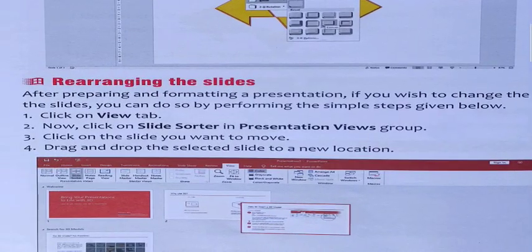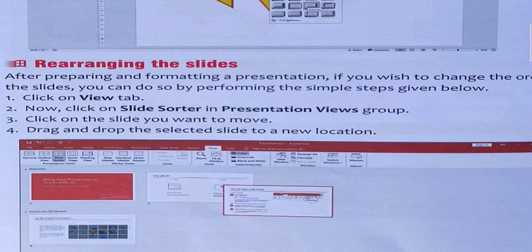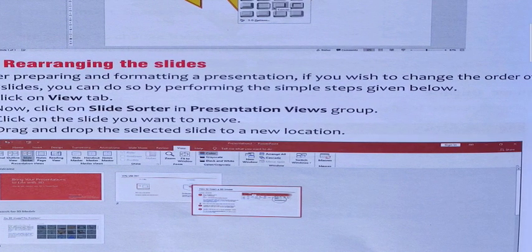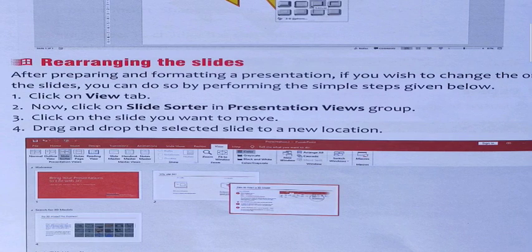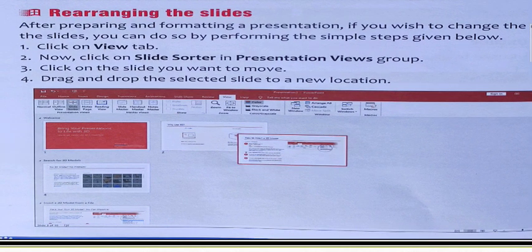Rearranging the slides: After preparing and formatting the presentation, if you wish to change the order of the slides, you can do so by performing simple steps given below. First of all, click on the View tab. Now click on Slide Sorter in Presentation View group. After completing your presentation, you can rearrange it. To rearrange, you can use these steps. First you need to click on View tab.